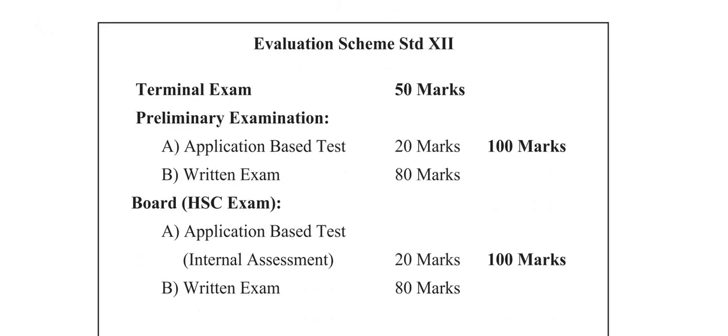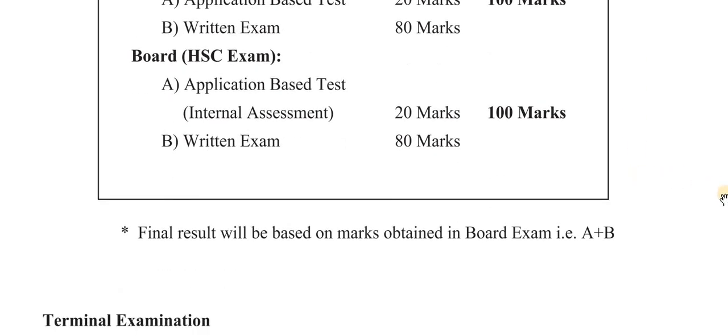You can see the entire evaluation scheme here. The terminal exam will be of 50 marks. Then you will have the preliminary examination divided into two parts: A is the application based test of 20 marks, and B is the written exam of 80 marks, making the preliminary exam 100 marks total. The HSC board exam follows the same structure — application based test of 20 marks plus written exam of 80 marks, totaling 100 marks. Your final result will be based on A plus B, that is 20 plus 80, equal to 100 marks.